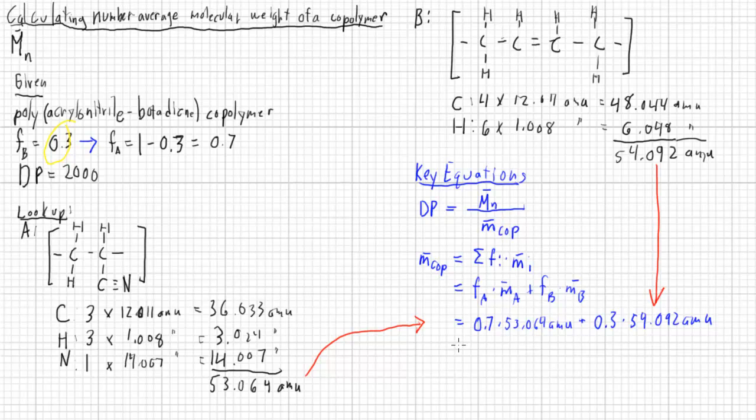After multiplying these, adding them up, we get 53.372 AMU.